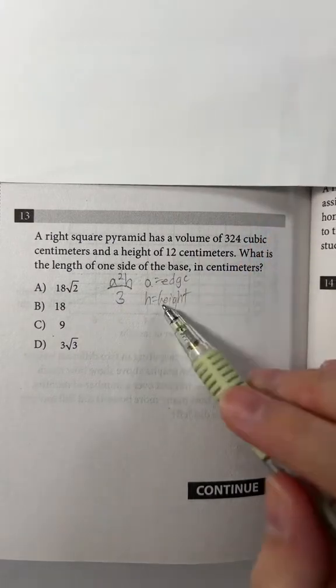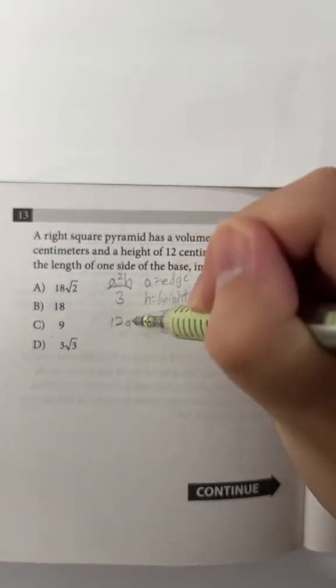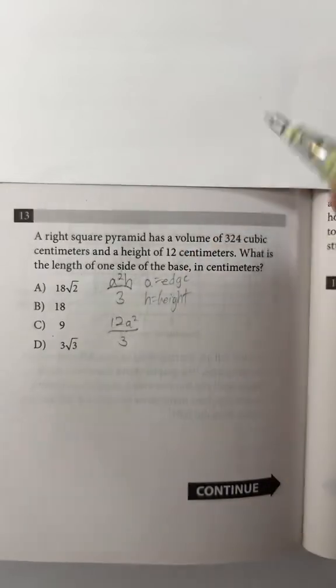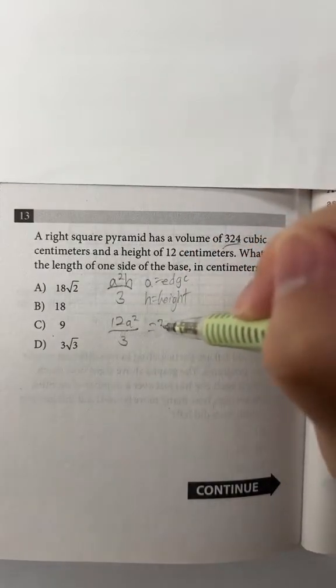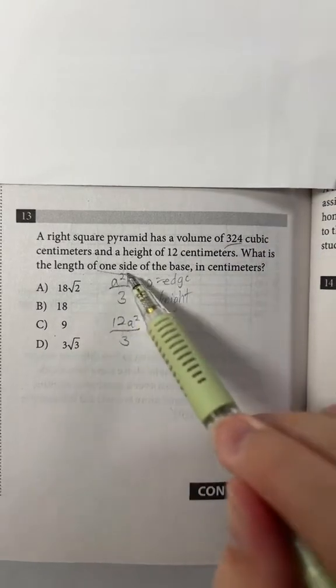So we know that the height is equal to 12, so that means we can plug that in. So 12 times a squared over 3, and we know that the volume is equal to 324. So now all we have to do is solve for a, which is basically just one side of the base.